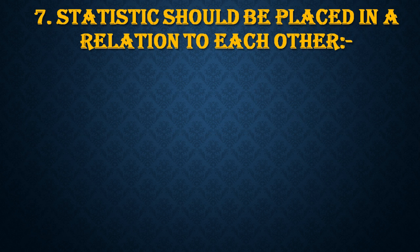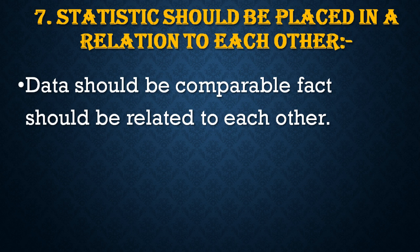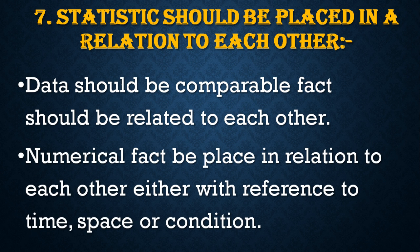The seventh point: statistics should be placed in relation to each other. The data should be compared and facts should be related to each other — then and then it is statistics. Numerical facts should be placed in relation to each other with reference to time, space, or condition. For example, the population of India during independence was 30 crores and now it is 130 crores — so over a period of 50, 60, 70 years it has increased; that is statistics. In India the literacy rate is 50% and in America it is 60% — when we put them in relation to time and space, then it is statistics.